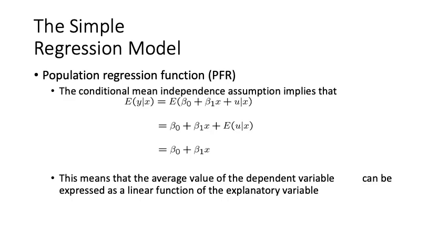In the case that there is independence between u and x, E(u | x) = 0, so the expression simplifies to beta naught + beta 1*x. This means the average value of the dependent variable y can be expressed as a linear function of the explanatory variable x.